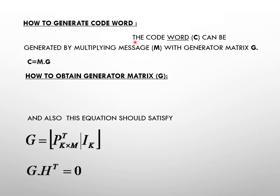The codeword c can be generated by multiplying message m with the generator matrix G: c = m · G. The generator matrix G can be obtained by writing P-transpose concatenated with I_k, where k = n minus m. So G can be obtained by taking the transpose of the parity sub-matrix P.